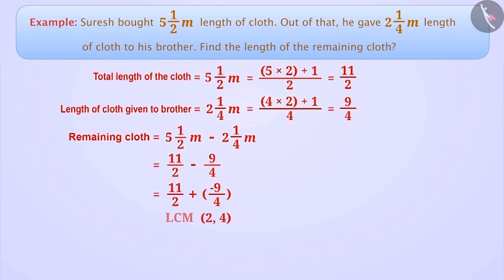Here, the LCM of the denominator of 11/2 and minus 9/4 is 4. The denominator of minus 9/4 is already 4, so we will not change it. But the denominator of 11/2 is not 4. To make it 4, we multiply both the numerator and denominator by 2. This will give us the rational number 22/4.